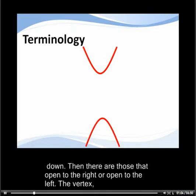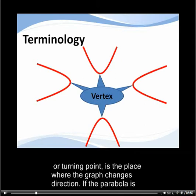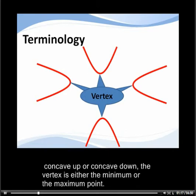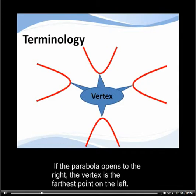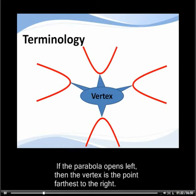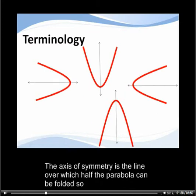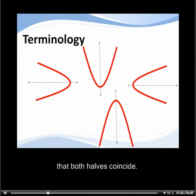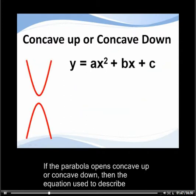Parabolas that open up or down are said to be concave up or concave down, and there are those that open to the right or open to the left. The vertex, or turning point, is the point where the graph changes direction. If the parabola is concave up or down, the vertex is either the minimum or the maximum point. If it opens right, the vertex is the farthest point on the left; if it opens left, the vertex is the farthest point to the right. The axis of symmetry is the line over which half the parabola can be folded so that both halves coincide.